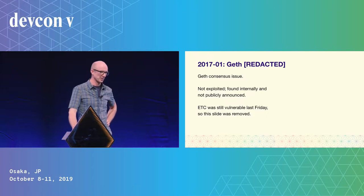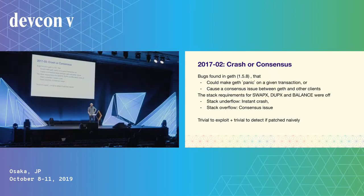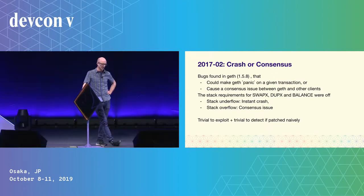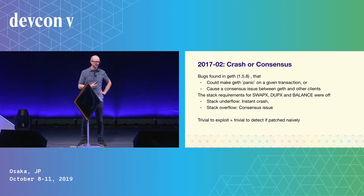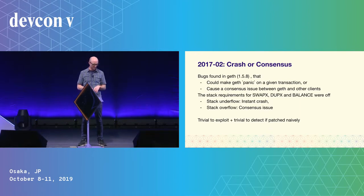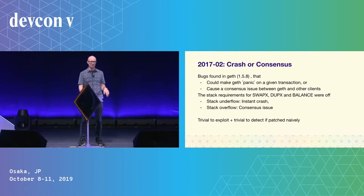In February 2017, there was a very interesting consensus bug — a combo bug that could either cause an instant chain split or crash all Geth nodes. The stack requirements were misconfigured for the SWAP, DUP, and BALANCE opcodes. If it led to a stack underflow, Geth would immediately panic and all nodes processing that block would drop off the network. If it led to a stack overflow, Geth would have a different state root than Parity, splitting the chain. Any attacker who found this could simply choose which route to take, and it would have been trivial to exploit and trivial to detect if passed naively.